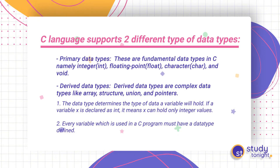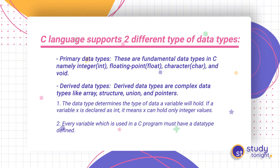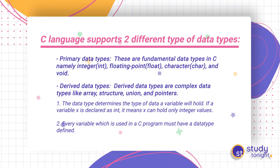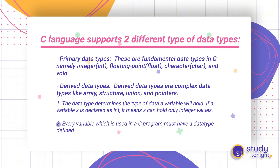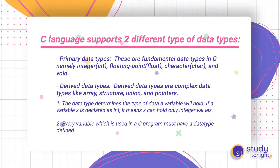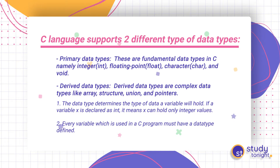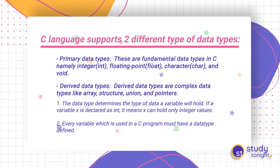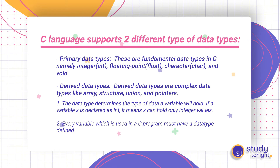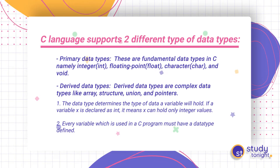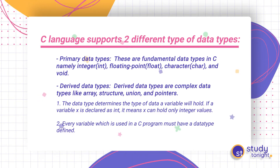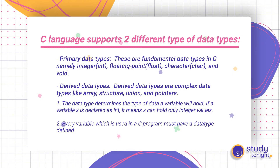Data types determine the type of data a variable will hold. If a variable X is declared as int, it means X can hold any integer values. If a variable we are using in the program is a decimal type, then it will return only a decimal type value. So the type of the variable must be declared.